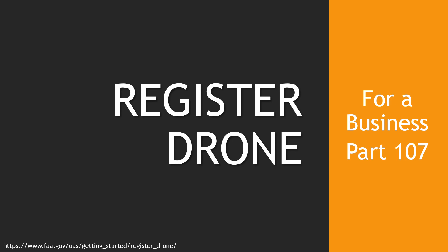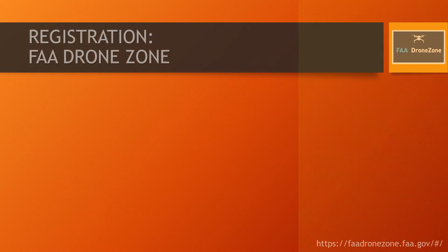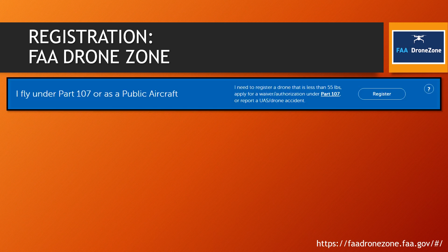A lot of this comes down to registering a drone for Part 107 business use. I'm walking through it step by step, pulling all this information from faa.gov's getting-started and registration section. It all comes from what they call the FAA DroneZone — that's their little logo. The first thing is to pick between Part 107 or recreational flying, and the identification tool helps you figure out which one applies to you.